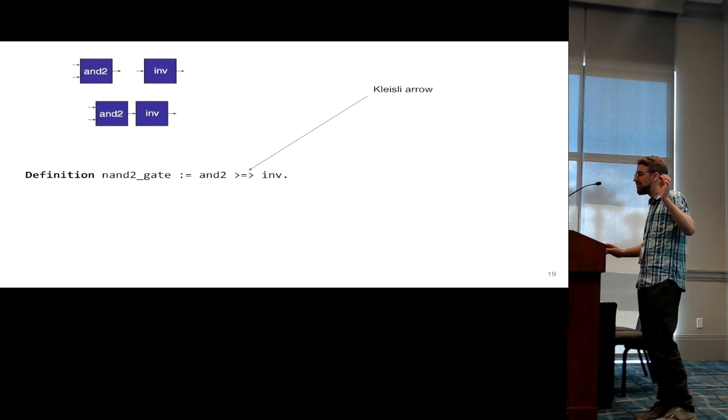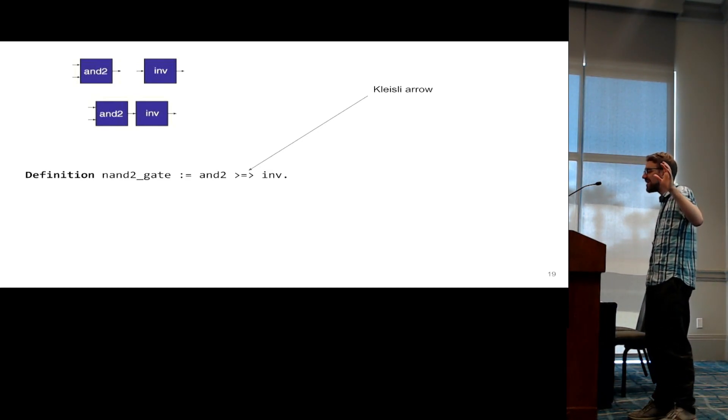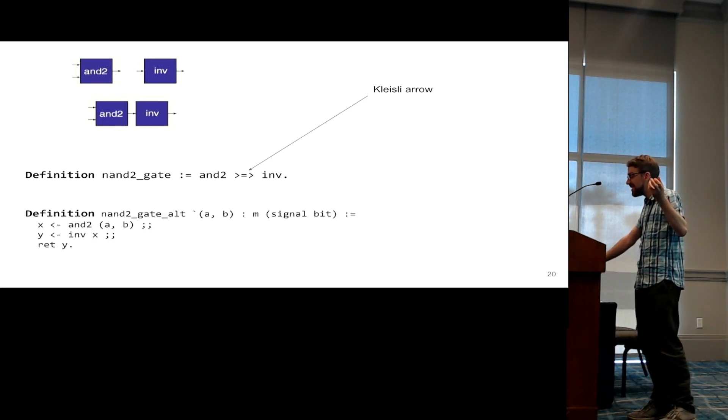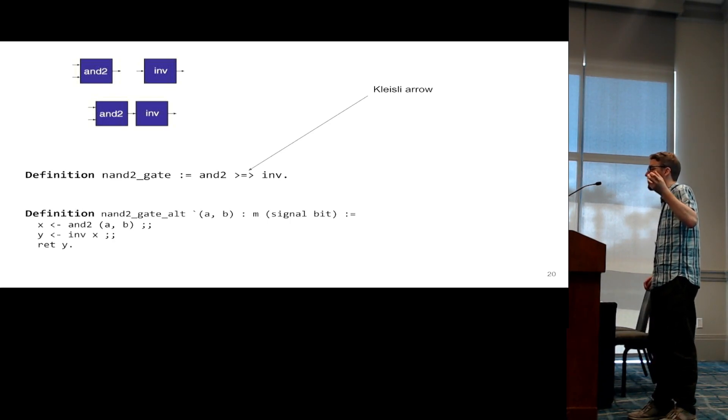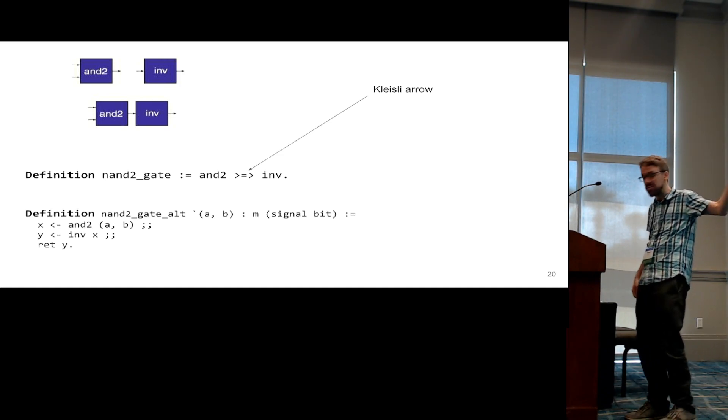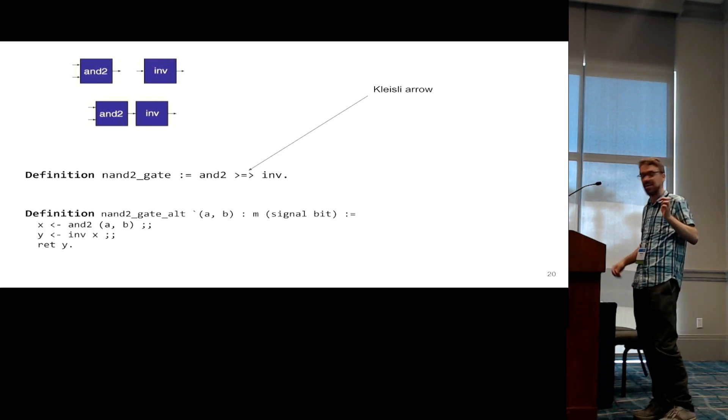And just to give one very simple example, say you have an AND gate, and an inverter gate, and both live in this monadic style, you can use either a Kleisli arrow to compose them together, or if you don't like the high-level monadic operators, you can also write in do notation, so these two definitions are exactly equivalent.